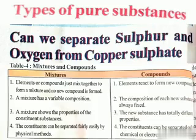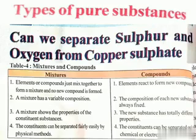A mixture shows the properties of its constituent substances. But in a compound, a new substance is formed whose properties are completely different when compared to the starting substances. In mixtures, components can be combined in any ratio. In compounds, the constituent elements combine in a fixed ratio. The constituents of mixtures are separated by physical methods; those of compounds by chemical methods.